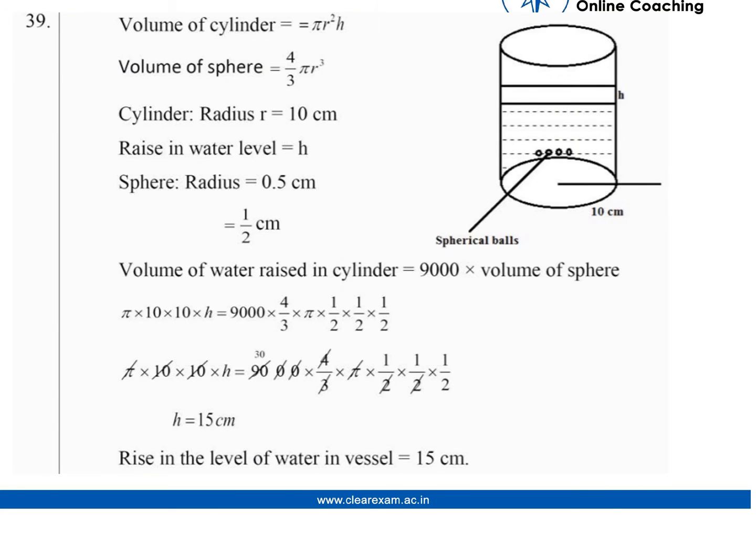The answer will be like this: this is the cylindrical vessel and these are the small spherical balls which we drop into the water, and this is the height h we need to find.